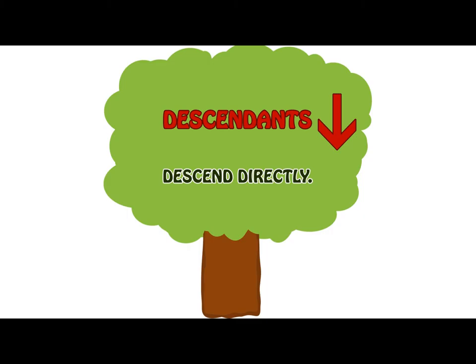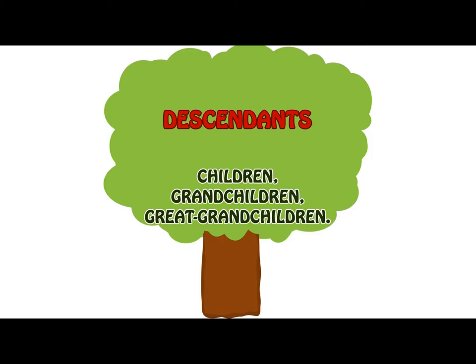In intestate succession, we talk about the descendants of a deceased person. These are persons who descend directly from the deceased. Common law descendants include lineal descendants of the deceased — these would be children, grandchildren, and great-grandchildren. When we think of descendants, we think of a downward line, those who descend from the deceased.